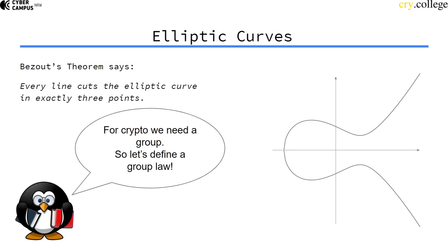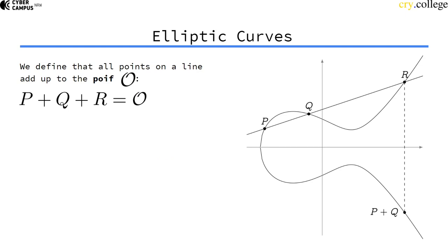If we want to use elliptic curves in cryptography, for example for Diffie-Hellman, we need a group. So let's just define a group law. Let's arbitrarily define that all points on a line add up to a mystical point called the point at infinity.